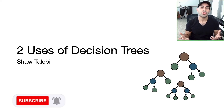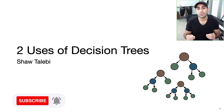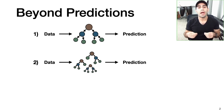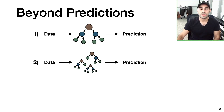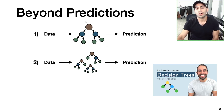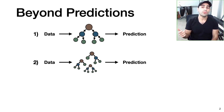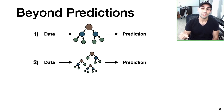Hey everyone, welcome back. I'm Shah and in this video I'm going to continue the series on decision trees and talk about a couple of applications. In the last two videos of the series we talked about how we can train predictive models using decision trees. In the first video we talked about models employing a single decision tree, and in the second video we expanded this idea to tree ensembles. If you haven't already, be sure to check those out because we're going to build upon those ideas in this video.